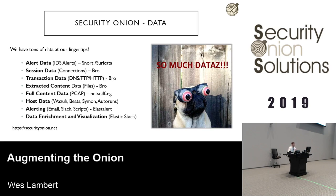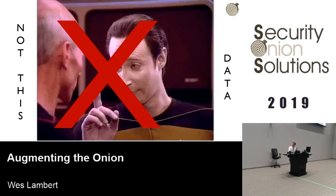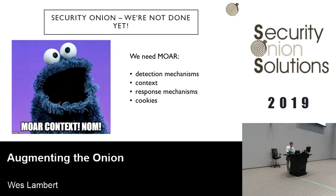We have so much data at our fingertips, but still we want more data and more context. We're not done yet — we want more detection mechanisms, more context, more response mechanisms. We want to expand and build on what Security Onion already provides.